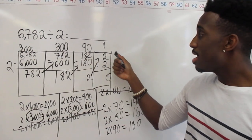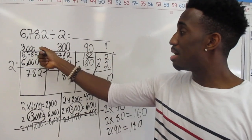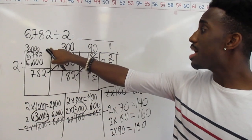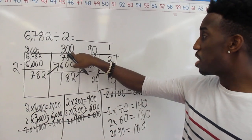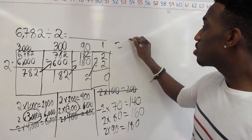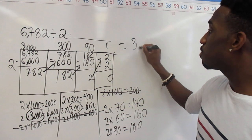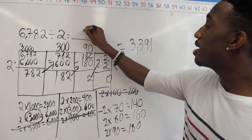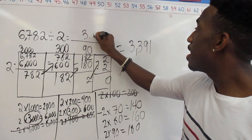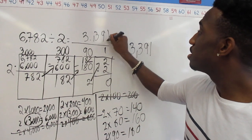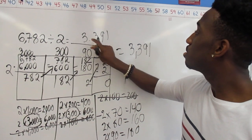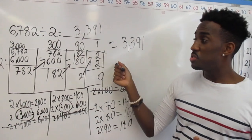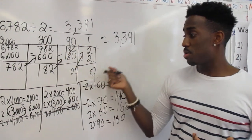So I just divided and I have all these numbers on top. Now I'm going to add them up: 3,000 plus 300 plus 90 plus 1 gives me a total of 3,391. And that is my answer — that's what I got by using the area model for division. Thank you.